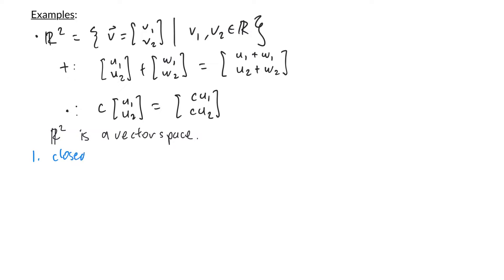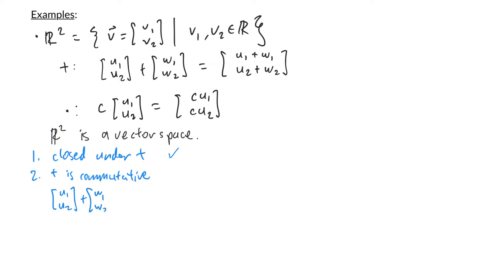Is R² closed under addition? If I have a pair of two-dimensional vectors and I add them together, the result is a two-dimensional vector, so yes it's closed. For property 2, we want to check that addition is commutative. Adding arbitrary vectors u₁, u₂ plus w₁, w₂ gives u₁+w₁, u₂+w₂. Because addition is commutative in real numbers, this equals w₁+u₁, w₂+u₂, which is w₁, w₂ plus u₁, u₂. So addition is commutative.